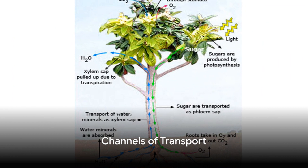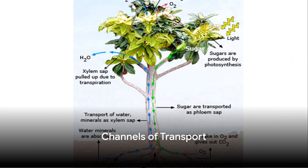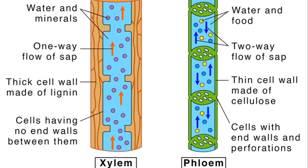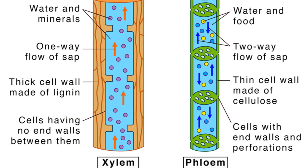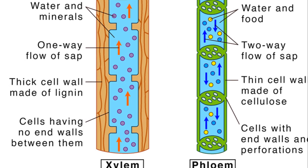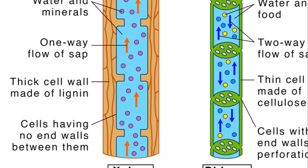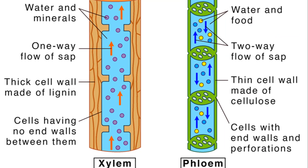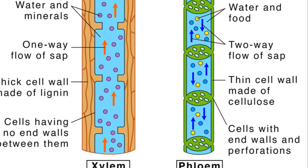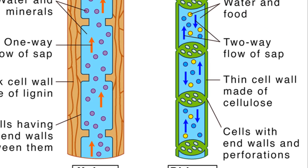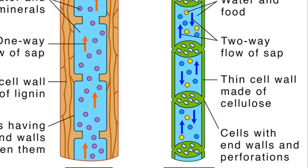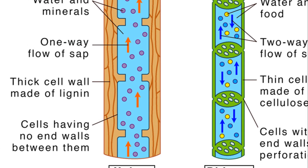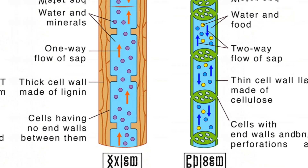So how do these substances travel? Enter the channels of transport: the xylem and phloem. The xylem, composed of long hollow cells called tracheides, transports water and minerals from roots to the rest of the plant. The phloem, on the other hand, moves food and other organic materials from leaves to other parts. These two make up the vascular bundle, the plant's highway system.